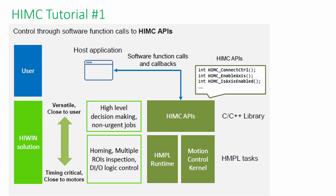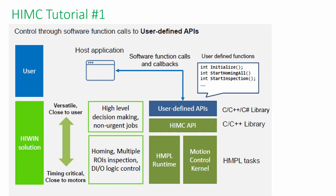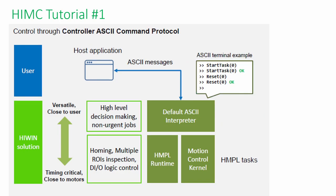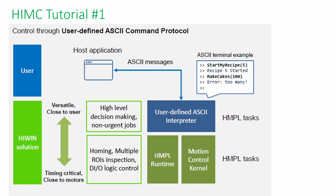Besides, the callback function will return a non-zero value if the command is failed. Users can create their own API to simplify the logic in HMPL, which is the programming language in HIMC. ASCII command is also available for the upper controller. It can be divided into controller ASCII command and user-defined ASCII command. There is a Modbus TCP protocol as well.